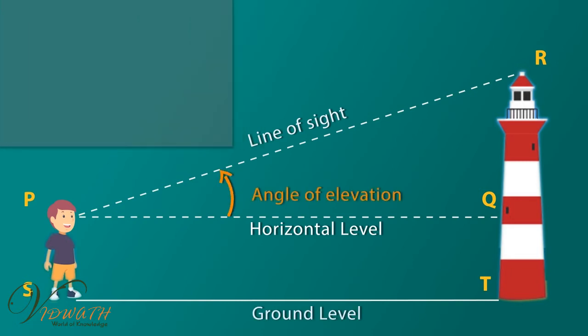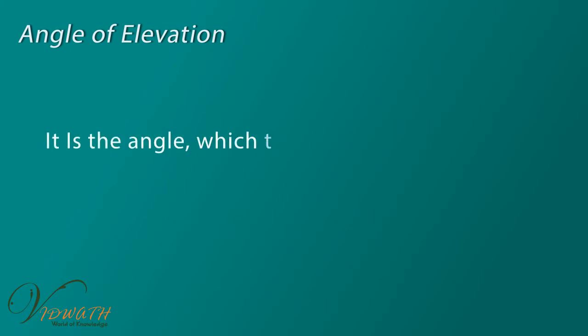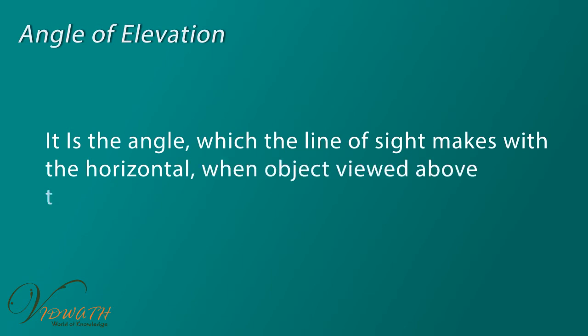You see in this figure, angle QPR is angle of elevation. PR is line of sight, PQ is horizontal level, ST is ground level, PS is equal to height of the student or boy. Perhaps you need to know this information to solve the above problem. Angle of elevation: it is the angle which the line of sight makes with the horizontal when object viewed above the observer.